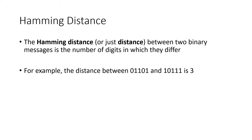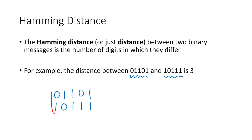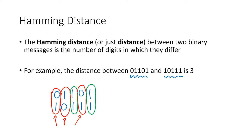For example, if we have the two messages 01101 and 10111, the distance between those messages is three. The easiest way to see that is to line up the two messages on top of each other. They differ in the first digit, they differ in the second digit, they're the same for the third digit, they differ in the fourth digit, but they're the same for the fifth digit. So the number of digits in which they differ is three, and the distance between these two messages is three.